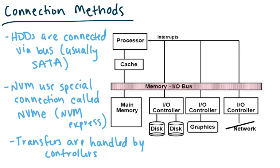On connection methods: HDDs are usually connected via a bus, typically SATA. NVMs, since they're so fast with no moving parts, can handle a lot of IO very quickly, so a special connection called NVMe — NVM Express — was developed to handle IO from an NVM. All these transfers are handled by controllers. You can see in the diagram that you have your discs and an IO controller talking to the disc, taking what the processor is asking for, and moving it through the bus to where it needs to go.